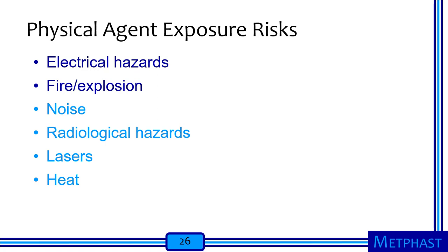Let's talk about physical agent exposure risks in nanomaterial workplaces that are separate from the nanomaterials themselves. These include electrical hazards, fire and explosion hazards separate from combustible dust, and others such as noise, radiological hazards, lasers, and heat — all potential physical agent exposure risks. We'll focus on electrical hazards and fire and explosion hazards.